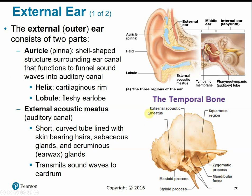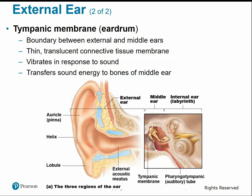The external acoustic meatus is a surface marking of the temporal bone — the ear canal entering the skull from the outer ear. The tympanic membrane is the boundary between the external and internal ear. It's a very thin, taut layer of connective tissue membrane that vibrates when sound waves make contact, transferring energy from those sound waves to the tiny bones inside the ear, which then trigger the auditory nerves.